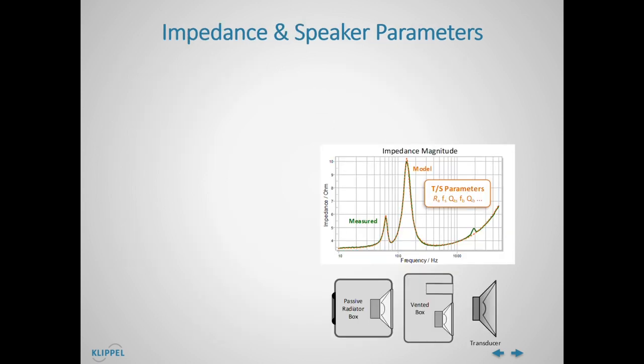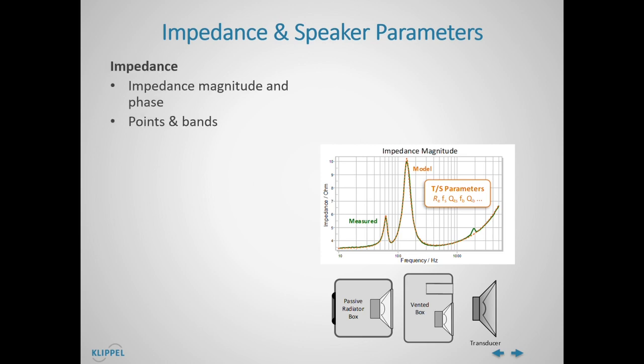The electrical measurement at the DUT terminals yields impedance and fitted electroacoustic model parameters for transducers as well as systems such as closed box or vented assemblies. Basic impedance characteristics are impedance magnitude and phase, point and band values of the impedance magnitude, and the minimum impedance.